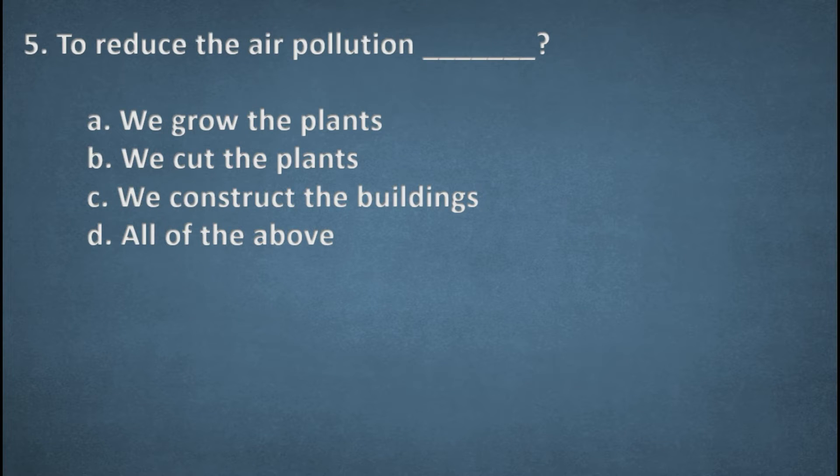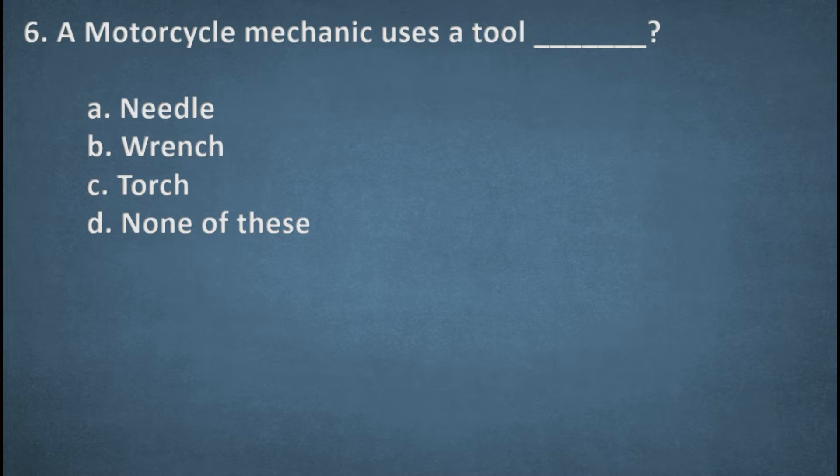Next one. To reduce the air pollution. Options: We grow the plants, We cut the plants, We construct the buildings, All of the above. The right option A, We grow the plants. Next one. A motorcycle mechanic uses a tool. Options: Needle, Wrench, Torch, None of these. Right option B, Wrench.